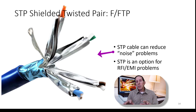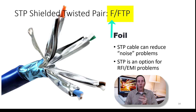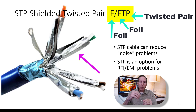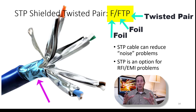Shielded twisted pair actually addresses a lot of the electrical noise problems we just talked about. Notice this particular version of STP — it's known as F/FTP, or foil/foil twisted pair. Notice you have foil wrapped around each twisted pair, which eliminates crosstalk completely. Then you have foil around all of the twisted pairs, which eliminates RFI and EMI. This design with shielded twisted pair really is a step up in eliminating electrical noise issues.